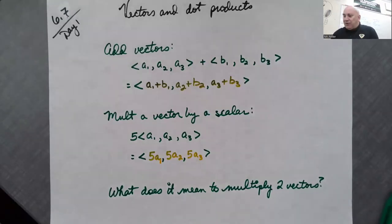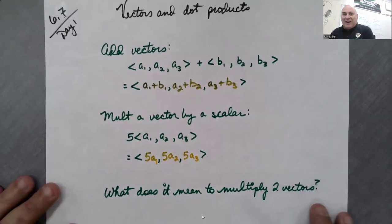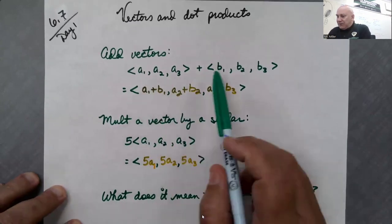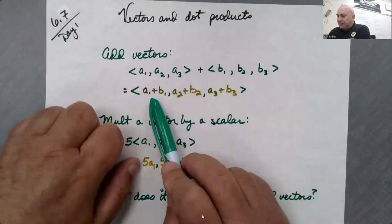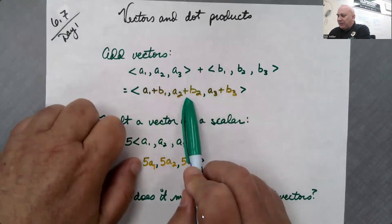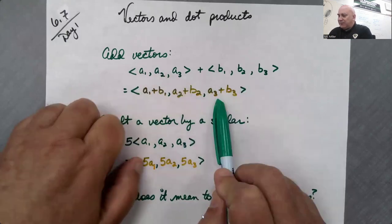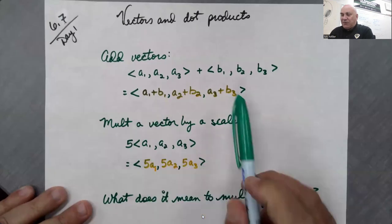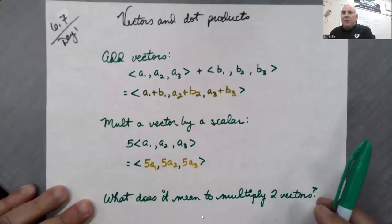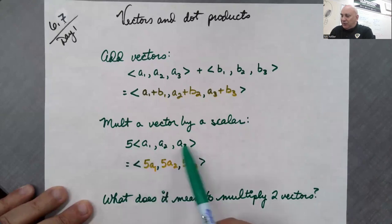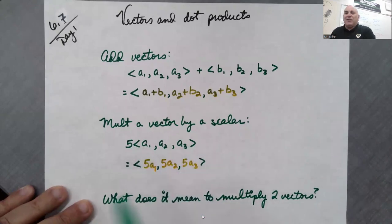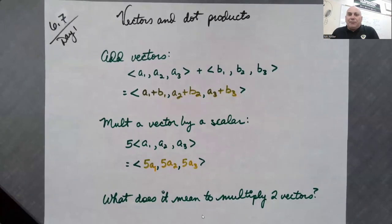We've already learned how to add vectors. If they're three-dimensional vectors, you add their first components, their second components, and their third components, and you have a resultant vector. If you multiply a vector by a scalar, you just multiply each of those components by that same scalar. So adding vectors is pretty easy, and multiplying by a scalar is pretty easy.